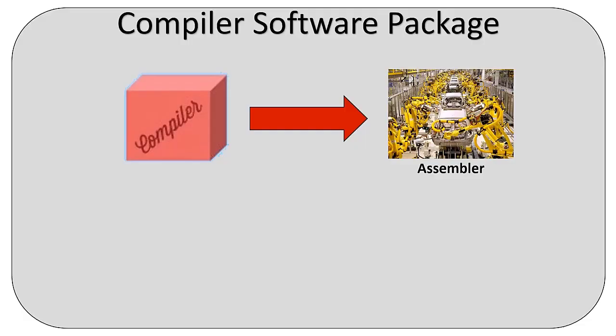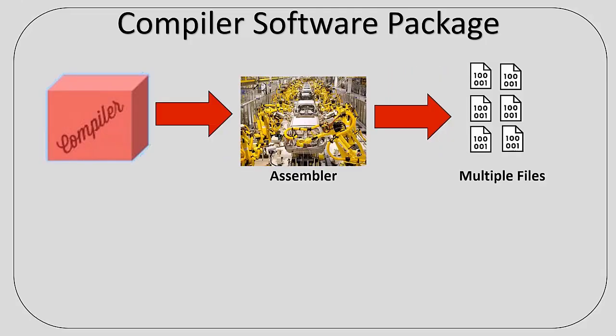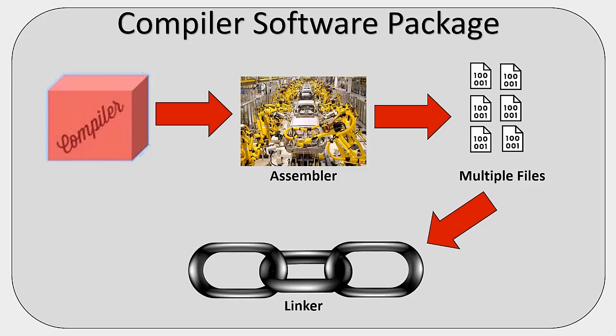The assembler, which is built into the IDE with the compiler, then translates the assembly language program into machine language. It creates object files which combine machine language, data, and information it needs to place instructions properly in memory. Often the assembler creates multiple files which need to be put together — this is where the linker, another part of the compiler software package, shines. The linker will take all the independently assembled machine language programs and object files and put them together, producing a .hex file that the microprocessor can understand and run.